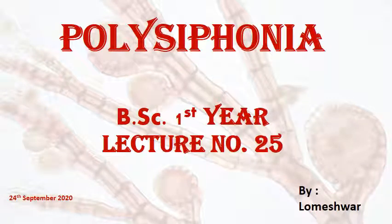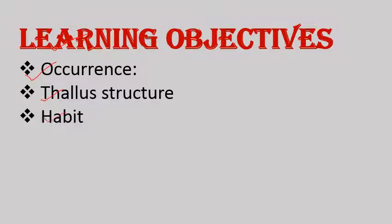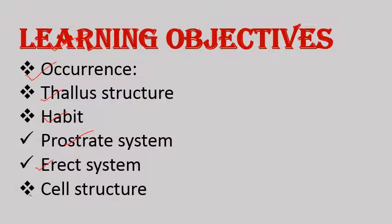Good morning everyone. Today we will start our next topic, that is Polysiphonia. It is a genus of red algae belonging to division Rhodophyta. Our today's learning objectives are: we will discuss about its occurrence, thallus structure, and its habit. Its habit is similar to that of Ectocarpus — it shows heterotrichus type of habit, meaning its plant body is divided into prostrate as well as erect system. We will also discuss its cell structure and growth.